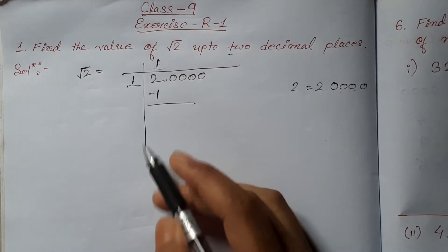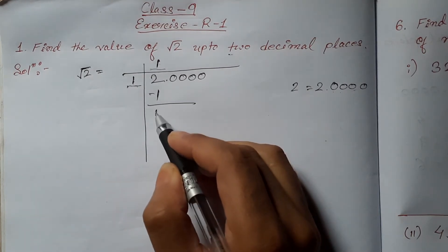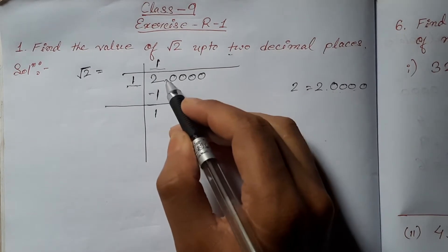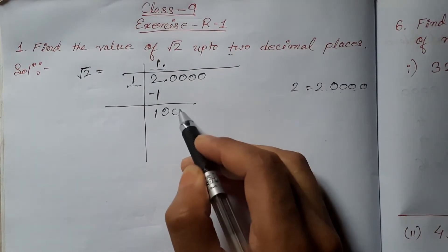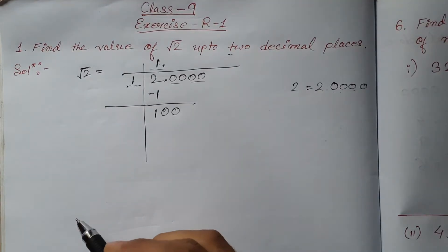Subtract 1 from 2. We will get 1. Put this decimal point here. Now, bring down these two zeros.